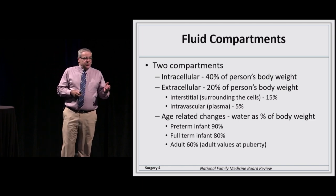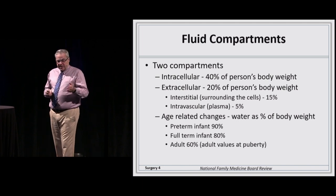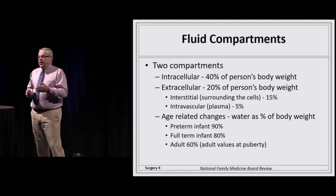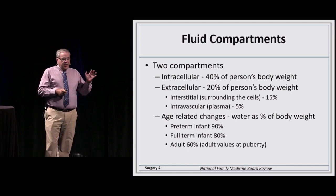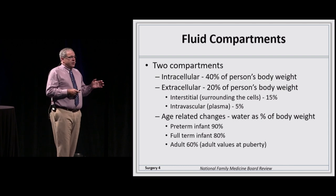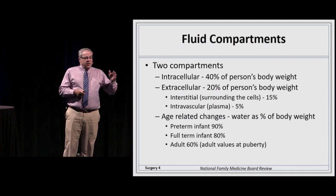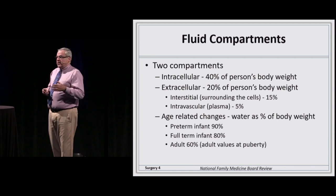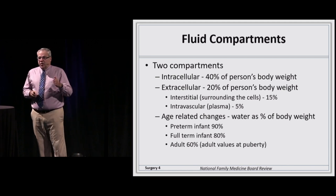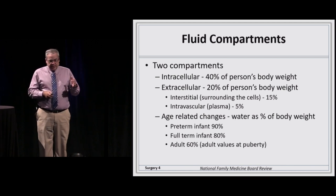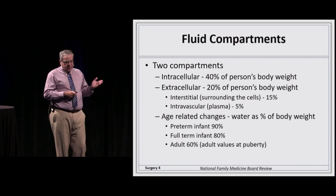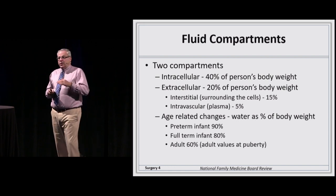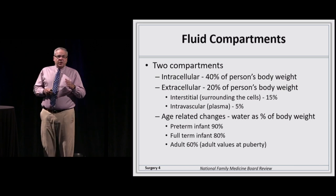The fluid in the human body exists in two compartments: the intracellular compartment, which is about 40% of body weight, and the extracellular compartment, which accounts for 20% of body weight. The extracellular compartment is divided two ways: three-quarters of that fluid is in the interstitial space around the cells, and one-quarter exists in the plasma or intravascular space.